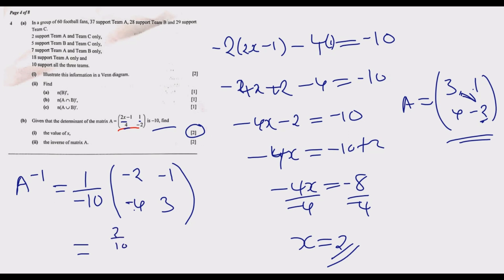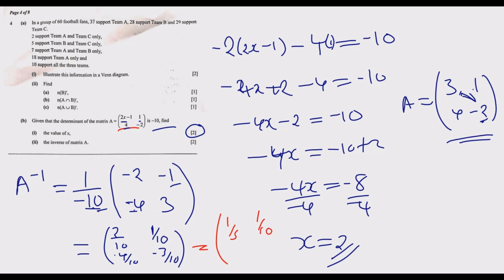Simplifying: 1 over negative 10 times the matrix [−2, −1, 4, 3] gives entries: negative 2 over negative 10 equals positive 1/5; negative 1 over negative 10 equals positive 1/10; 4 over negative 10 simplifies to negative 2/5; and 3 over negative 10 equals negative 3/10. So the inverse matrix A⁻¹ is [1/5, 1/10; −2/5, −3/10]. Thank you for joining us — join us as we look at Question 5 in Episode 5.